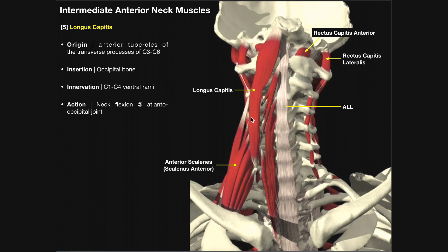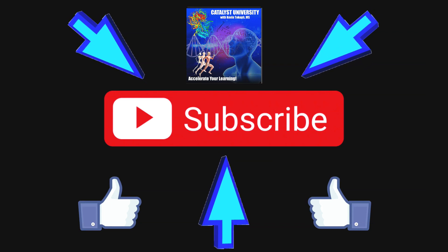Longus capitis is synergistic with the sternocleidomastoid muscles. The sternocleidomastoid is the major neck flexor, but longus capitis assists — it's just much deeper. The sternocleidomastoid will be covered in more detail when we look at the superficial layer in one of the next videos. Hopefully this video gave you a good understanding of the deep and intermediate layers of the anterior neck. In the next video, we'll do a brief review and then move into the hyoid muscles.